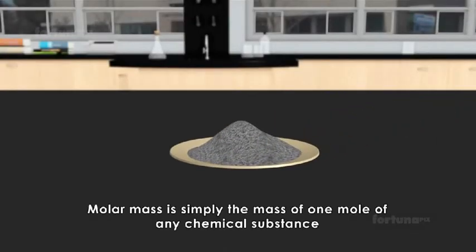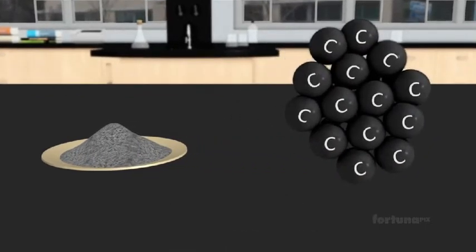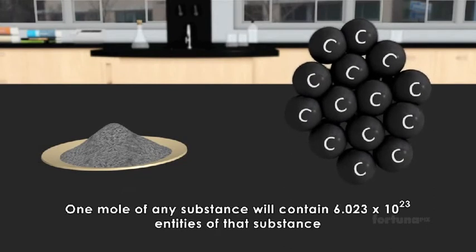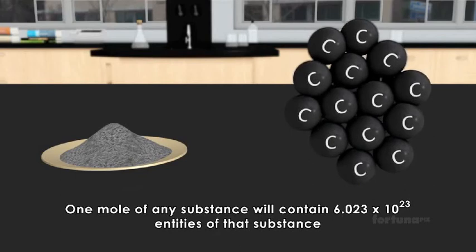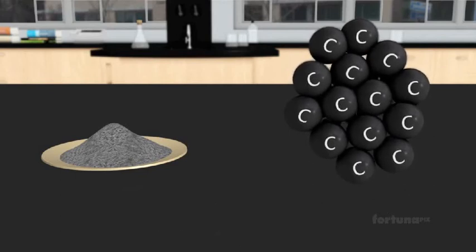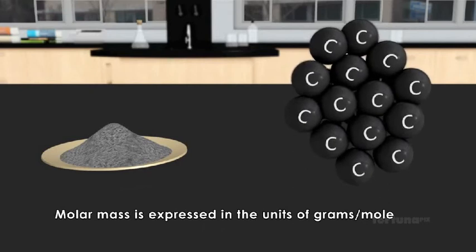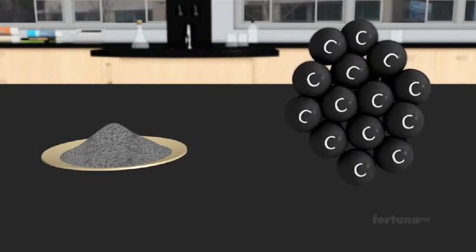Molar mass is simply the mass of one mole of any chemical substance. One mole of any substance will contain 6.023 × 10²³ entities of that substance. Molar mass is expressed in the units of grams per mole. We can calculate molar mass by adding up the atomic masses of the atoms that make up the molecule.